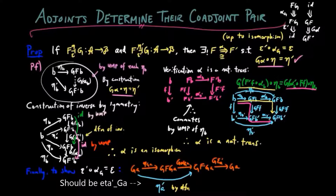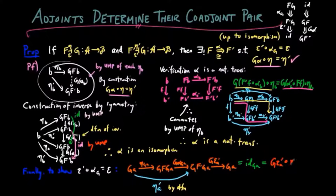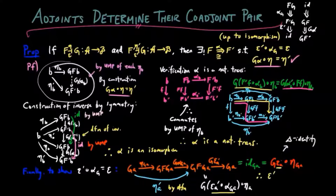Then by the triangle identity for the second adjoint situation above, this equals the identity on g a, which in turn equals g epsilon a eta g a by the triangle identity of the first adjoint situation. And we see that epsilon prime alpha g equals epsilon by the universal mapping property of the unit, and this completes the proof.